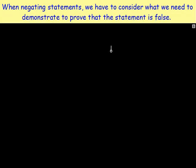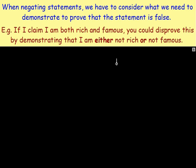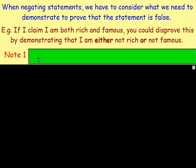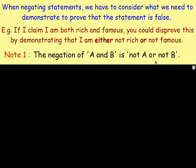When it comes to these statements, you really have to think about them and consider what you need to demonstrate to prove that the statement is false. For example, if I told you that I am rich and famous, you could disprove that by proving either that I'm not rich or that I'm not famous — just one or the other. So Note 1: the negation of 'A and B' is 'not A or not B'. You just have to disprove one of them to disprove the whole statement.